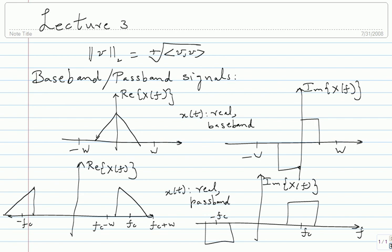A real passband signal can be represented using a complex baseband signal. The spectrum of a complex baseband signal will also have a real part and an imaginary part, but it need not be symmetric. The even symmetry and odd symmetry will not necessarily be there for a complex signal.